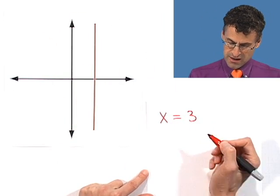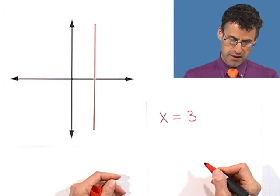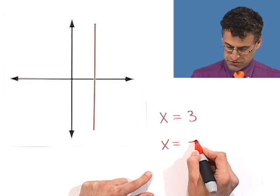For example, x equals three. That's the vertical line that's three units to the right of the origin, and that expresses the equation. If I say x equals negative two, what does that look like?